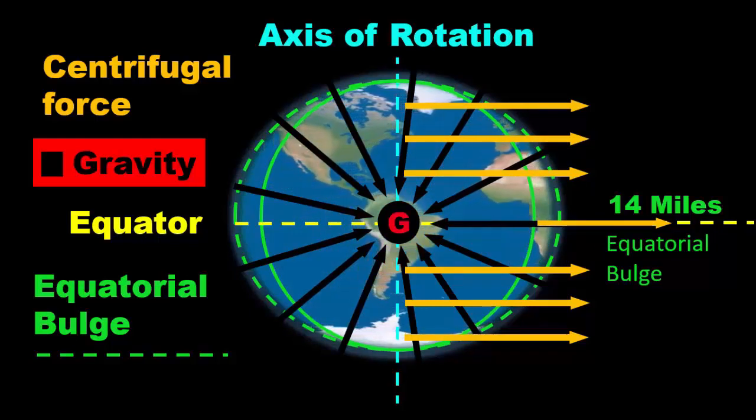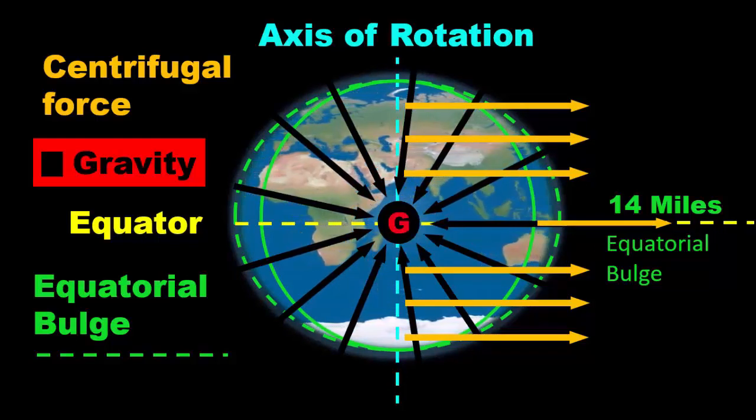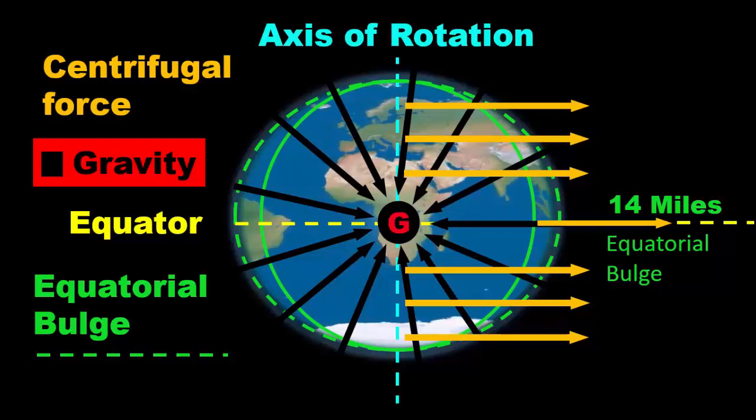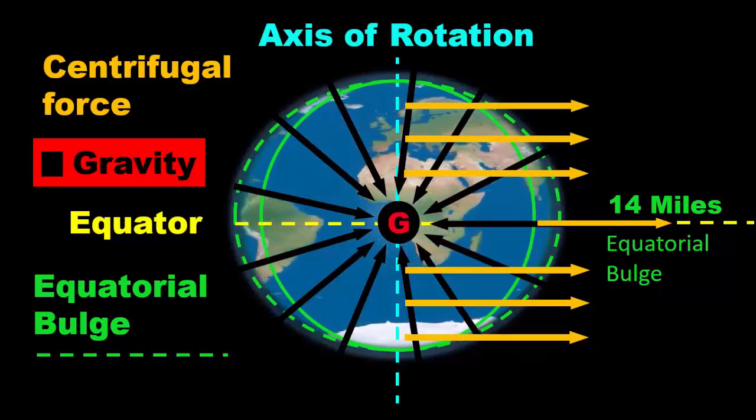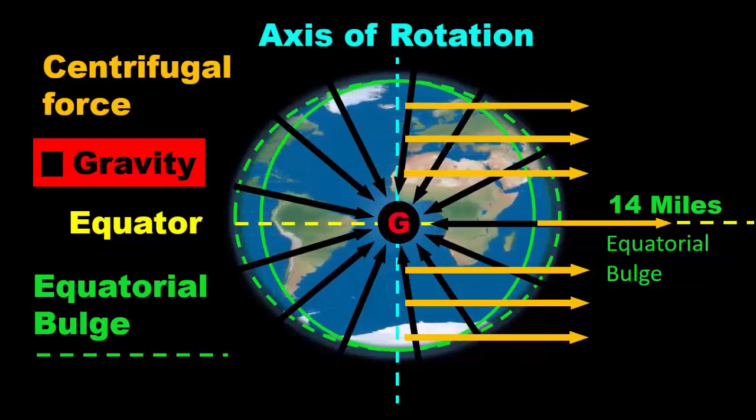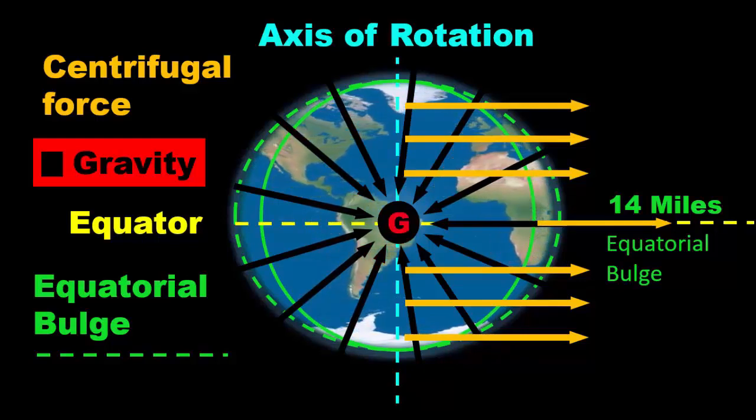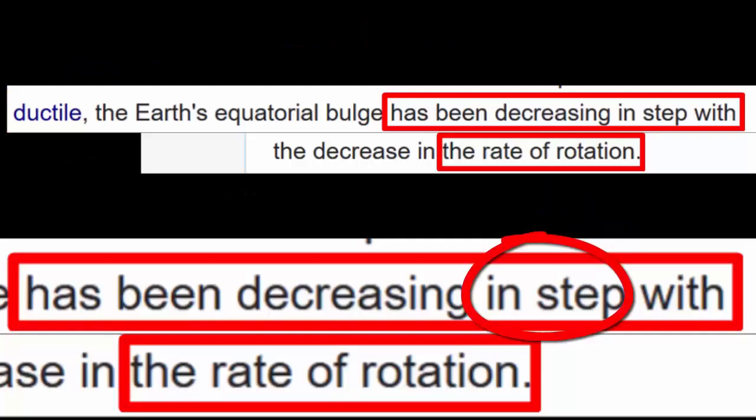So, as I've shown in this other clip, see this, these yellow lines are the centrifugal force. This would be the pole, the axis of rotation. Gravity points this way. So, in all of these, the water's going to slide this way. The water's going to slide this way. Now, this isn't my model. They say this. They say that the rotation is causing a flattening of the poles and a bulge 14 miles all the way around the equator, 14 miles high. It's like it says here in Wikipedia. The Earth's equatorial bulge has been decreasing in step with the decrease in the rate of rotation. That means that the size of the bulge is tied to the speed of the rotation. And so, this is now. This is happening now on the Earth. This is what they say.